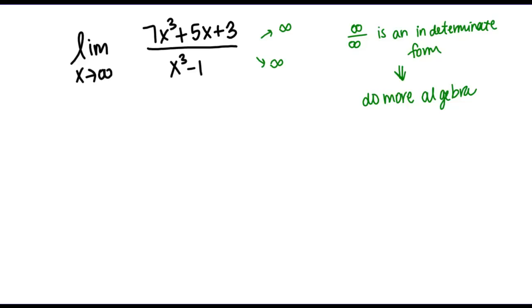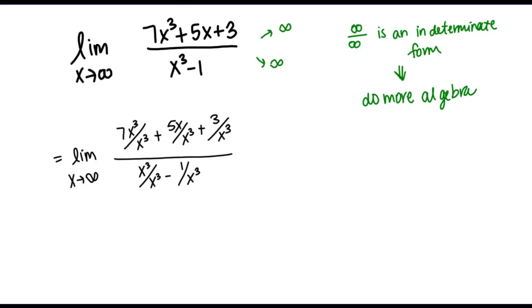There's a special method we use often for rational functions when taking the limit at infinity: divide every term by the term with the highest power in the denominator. In this case, my highest power term in the denominator is x cubed. So I'm going to divide every term in this expression by x cubed, giving me something that looks like this. From here, I'm simply going to reduce or simplify.